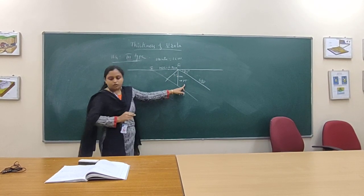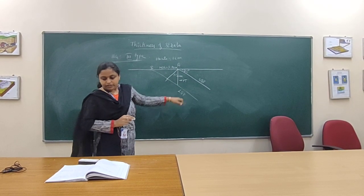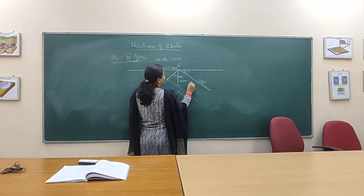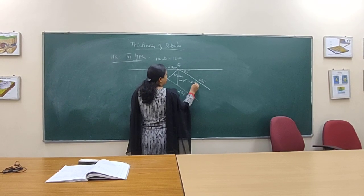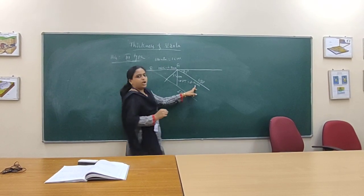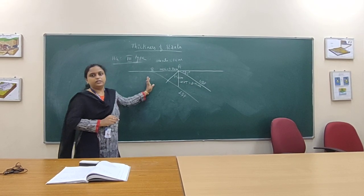The vertical thickness answer is 2.19 centimeters. These values you have then converted into meters.